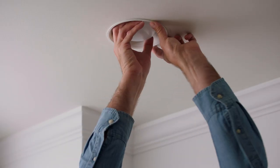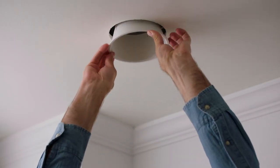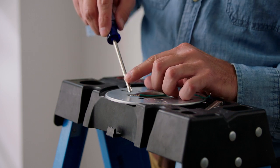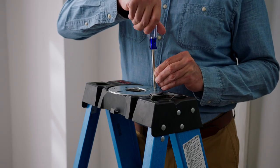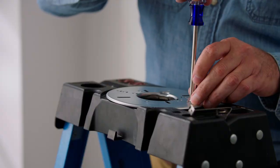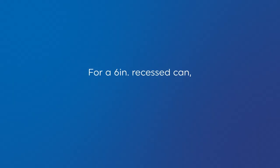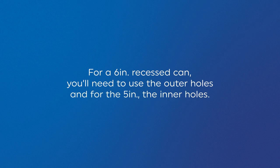Next, take off the existing trim and bulb from the housing. Then, remove the ground wire from the mounting plate, and use the two short screws to attach the clips onto the mounting plate. For a six inch recessed can, you'll need to use the outer holes, and for the five inch, the inner holes.